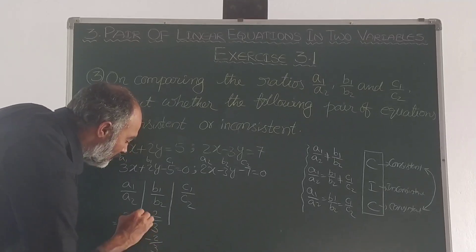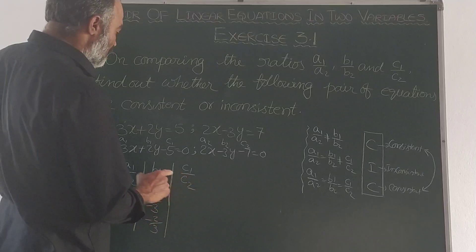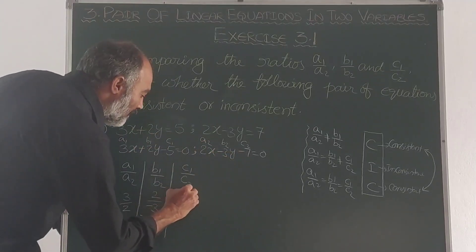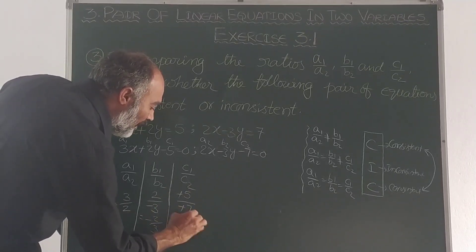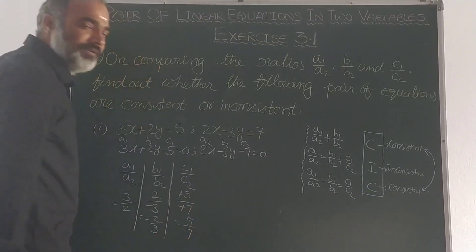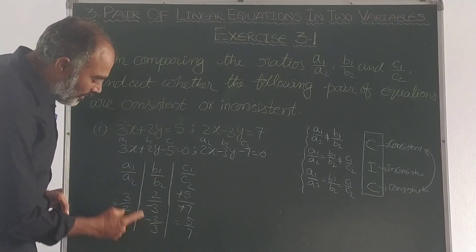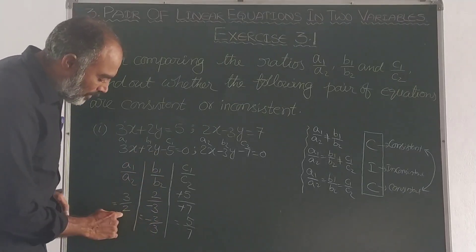c1 by c2 is minus 5 by minus 7, which equals 5 by 7. The condition to check is: a1 by a2 not equal to b1 by b2.